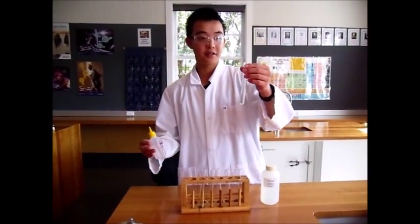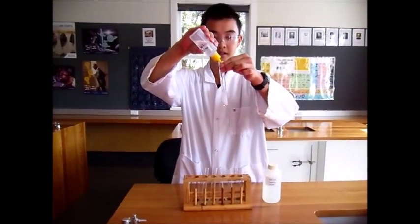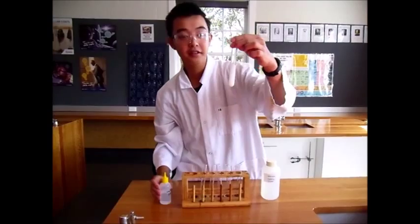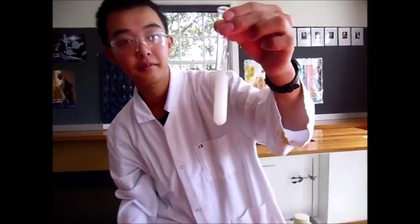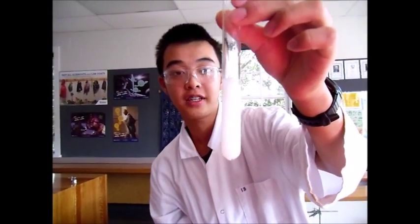So inside here I have some calcium nitrate and I will pour some sodium carbonate. This is a precipitation reaction because an insoluble gelatinous white precipitate has formed at the bottom of the test tube.